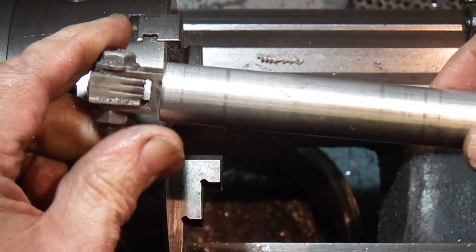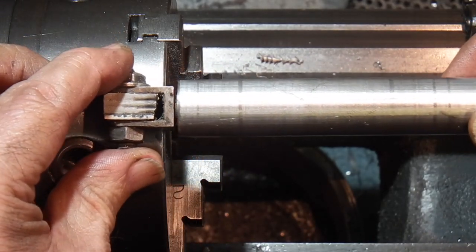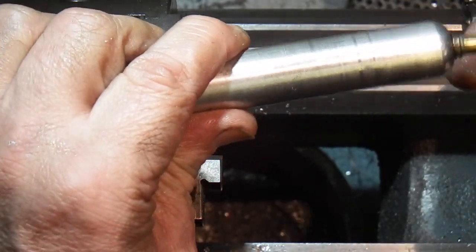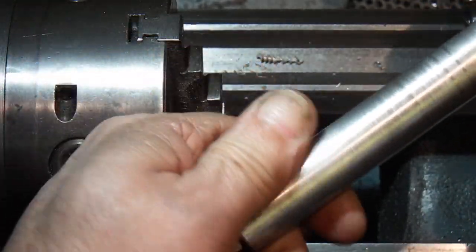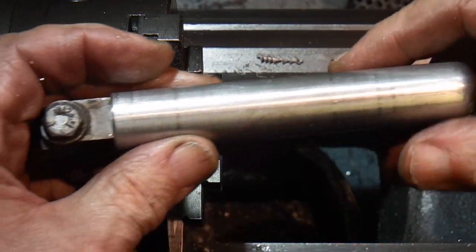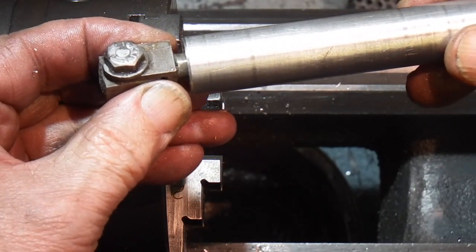Now I need to do two more things: drill and tap a hole through the side just to give a bit of grip on that, and also find a rod that can go through the centre of this. So as I tighten this handle up it will push this out the end to the right length.